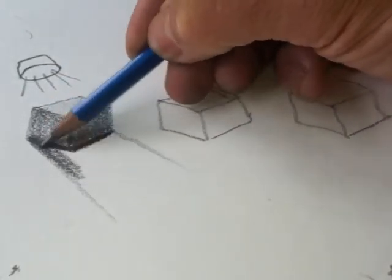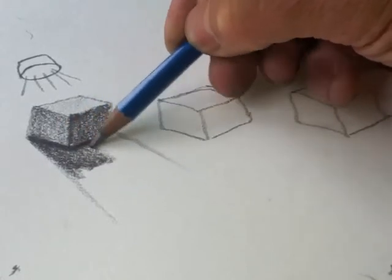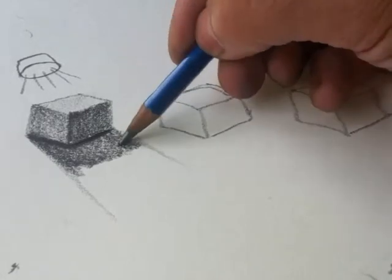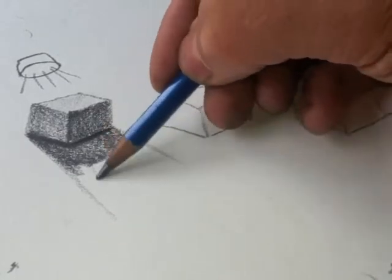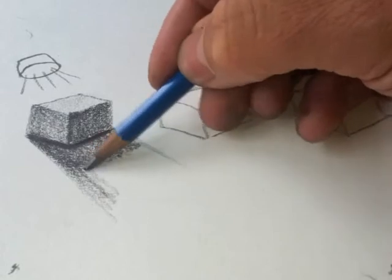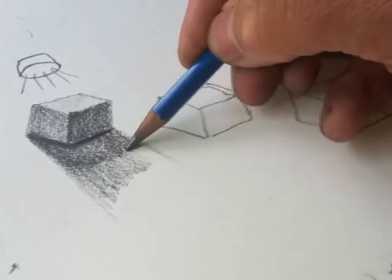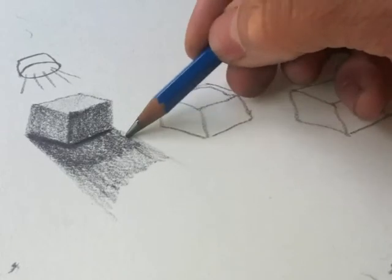And it's dark the closer it is to the object, and then it gradually fades out and gets lighter the further away, because the light's having less effect on it.